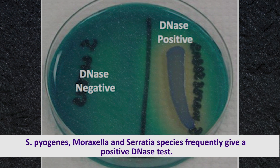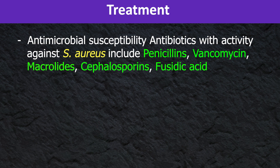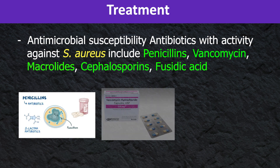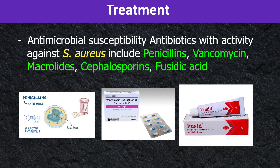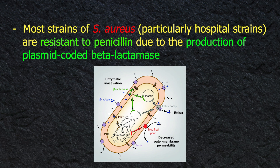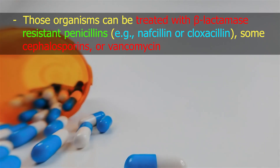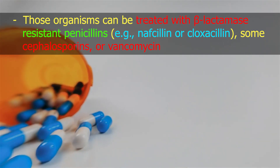Treatment — antimicrobial susceptibility: Antibiotics with activity against S. aureus include penicillins, vancomycin, macrolides, cephalosporins, and fusidic acid. Most strains of S. aureus, particularly hospital strains, are resistant to penicillin due to the production of plasmid-encoded beta-lactamase. About 90% or more of S. aureus strains are resistant to penicillin G. These strains can be treated with beta-lactamase-resistant penicillins such as nafcillin or cloxacillin, some cephalosporins, or vancomycin.